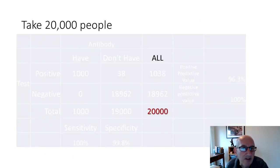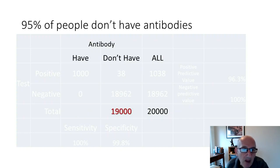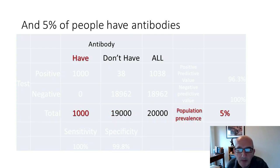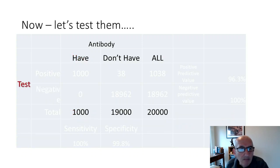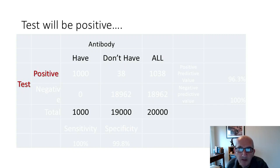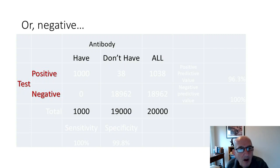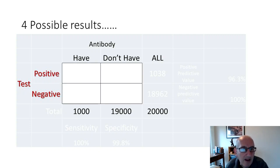Let's imagine that we have 20,000 people that we've evaluated this test on. We have a population of 20,000 people, of whom 19,000 do not have COVID-19 antibodies and 1,000 do, so that's a population prevalence of about 5%. That's probably what you'd find in a city like London at the moment. We're going to apply a test for antibodies to this group of people, and the test of course has two results: positive or negative, which opens us to four possible outcomes.